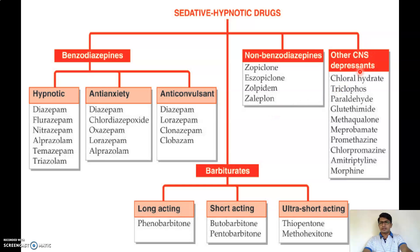Other CNS depressants include Chloral hydrate, Triclophos, Paraldehyde, Glutethimide, Methaqualone, Meprobamate, Promethazine, Chlorpromazine, Amitriptyline, and Morphine.